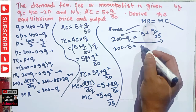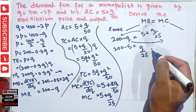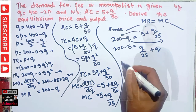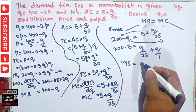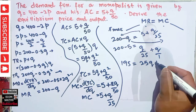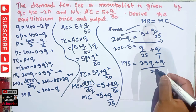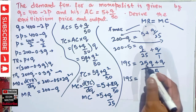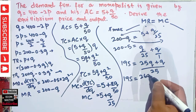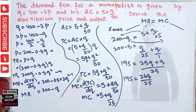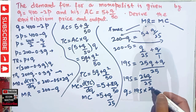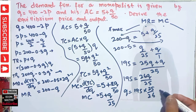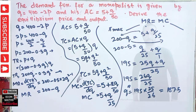195 = Q/25 + Q = 26Q/25. Cross-multiplying: 195 × 25 = 26Q, so Q = (195 × 25)/26 = 187.5. Our equilibrium output is Q = 187.5.